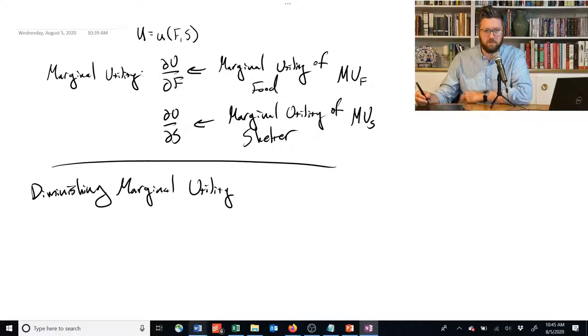So diminishing marginal utility means that the second derivative, so if you take the derivative, for example, of food twice is less than or equal to zero. This could also be written as just the derivative of the marginal utility of food with respect to food.